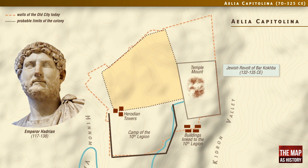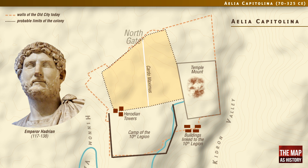Following this revolt, the emperor definitively banished the Jewish population from the city. Aelia Capitolina was built using the classic orthogonal plan for Roman cities. It is still possible to see traces of the two north-south cardos in the old city. The cardo Maximus ran from the north gate, known as the Gate of the Column.